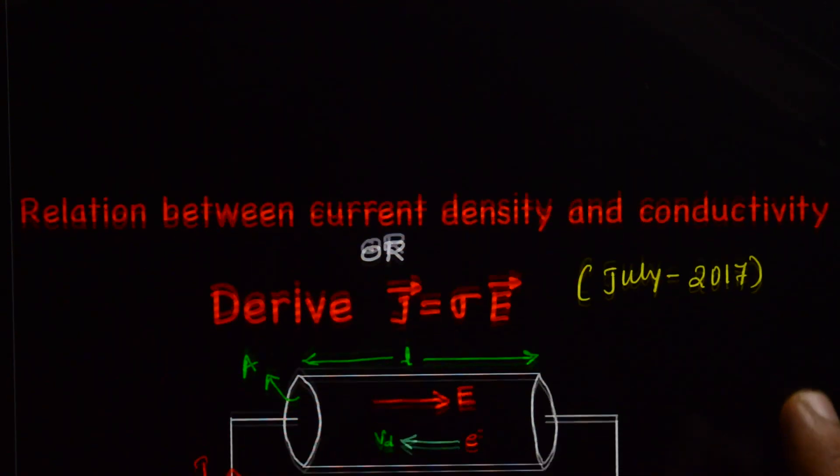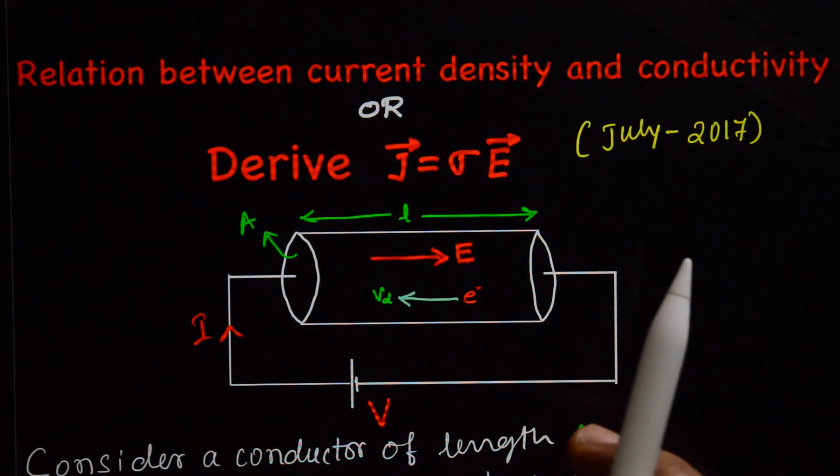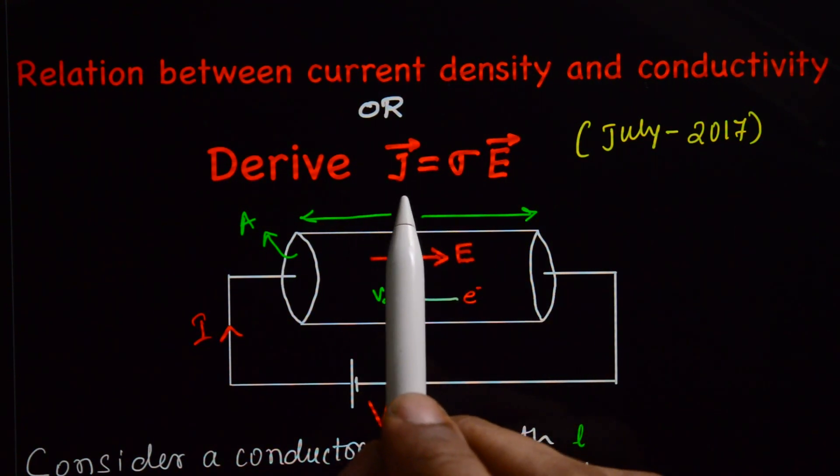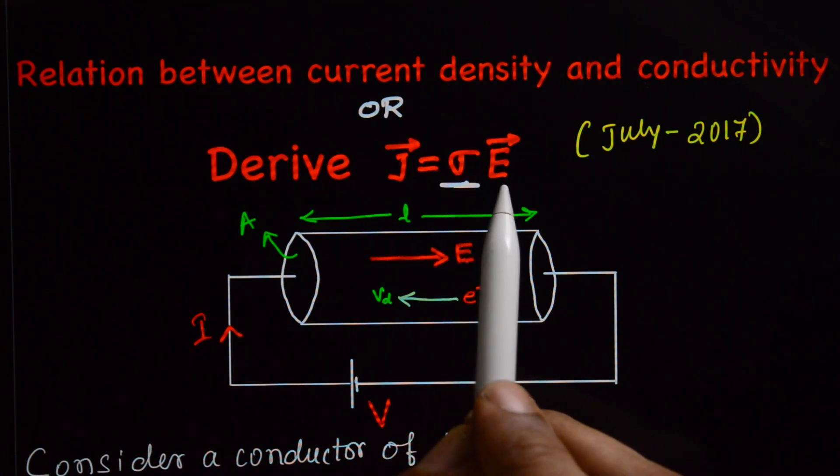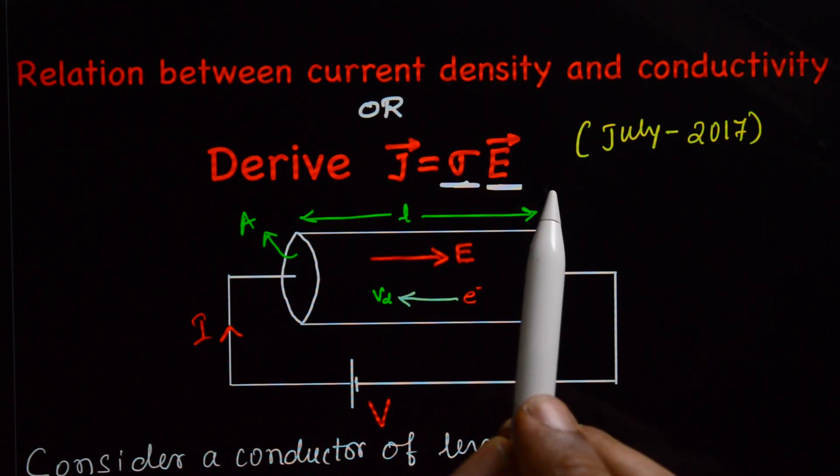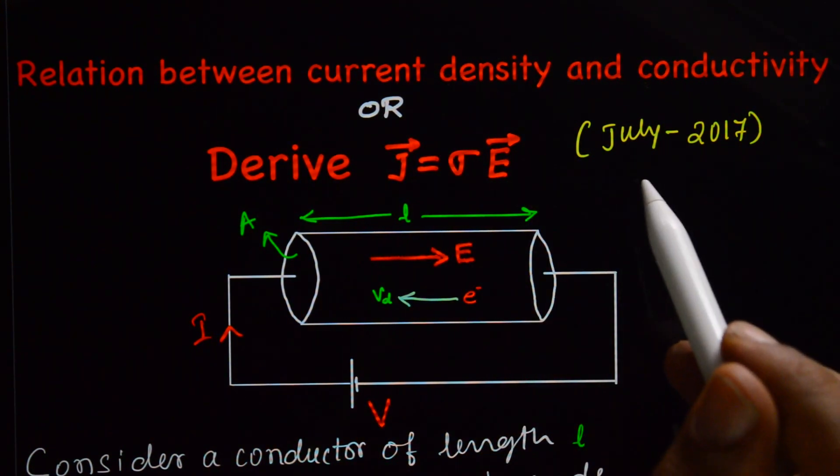Okay, if you know these things, we can derive an expression, J, that is current density is equal to conductivity into electric field.